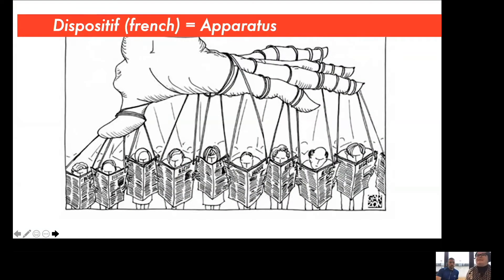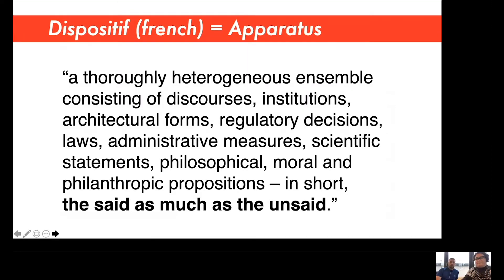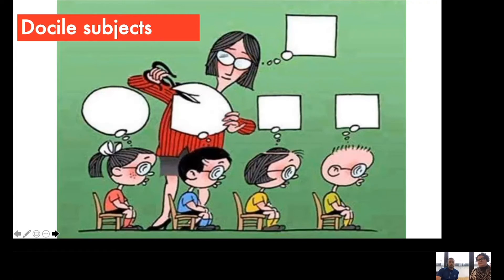So what Foucault was saying is that there is an apparatus. And again, this is a key term. Don't look at it in the dictionary. Foucault's meaning of apparatus is very different. And this is an apparatus where society controls you. Society shapes you. So he was talking about docile subjects. So imagine when you train your dog to not pee in the house or don't chew your shoes. It's the same with humans.